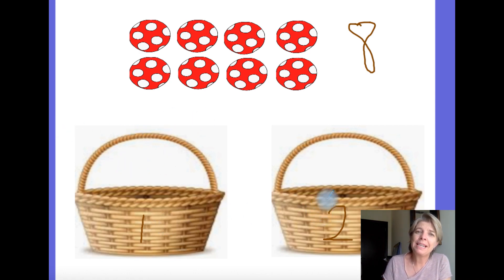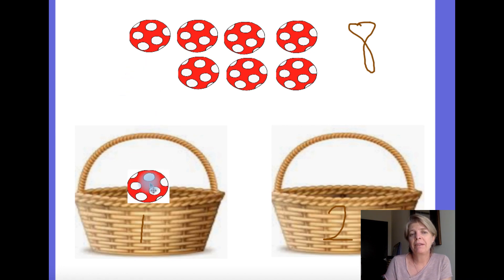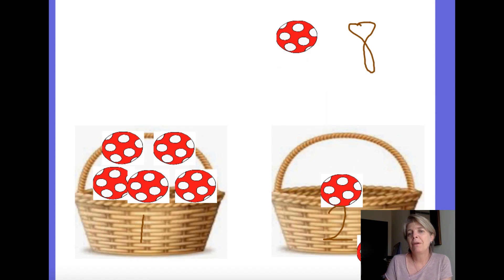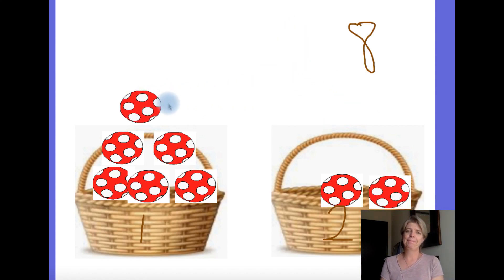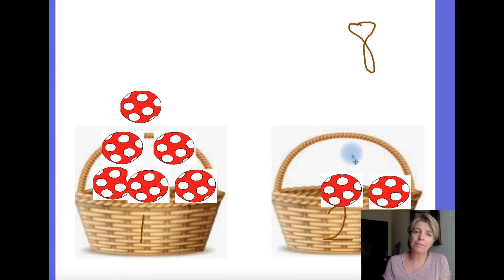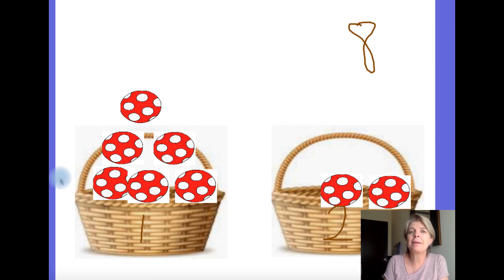But it has to be equal. Do you remember that word equal? It means the same. We can't say one for me, one for you, one for me, one for me, one for me, one for me, one for you, one for me — is that equal? Are they the same number? No, they're not, are they? That's not fair. It's not equal. To halve something, we have to make two parts exactly the same size.